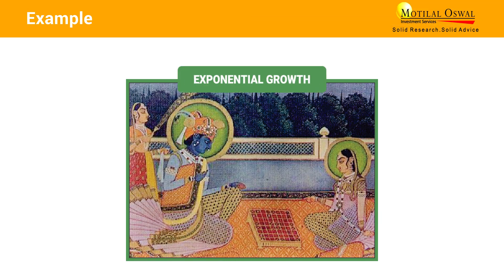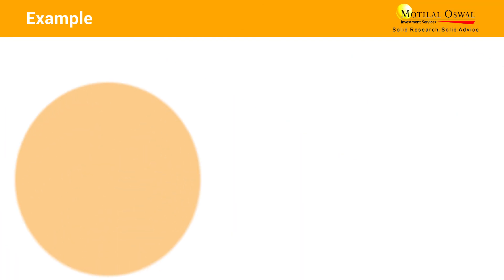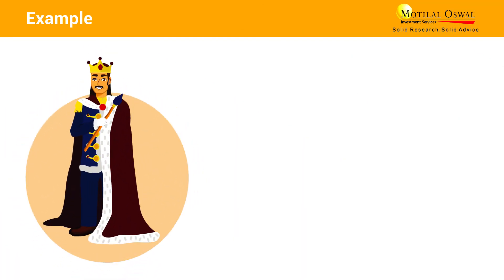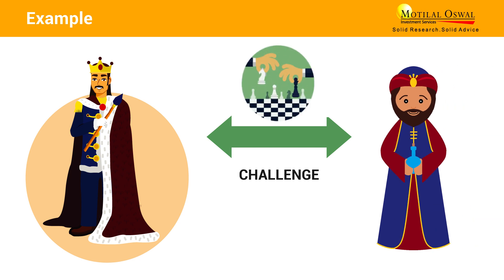Let's use an ancient Indian chess legend as an example to understand the power of compounding. There was once a king who was a big chess enthusiast and had the habit of challenging wise visitors to a game of chess.